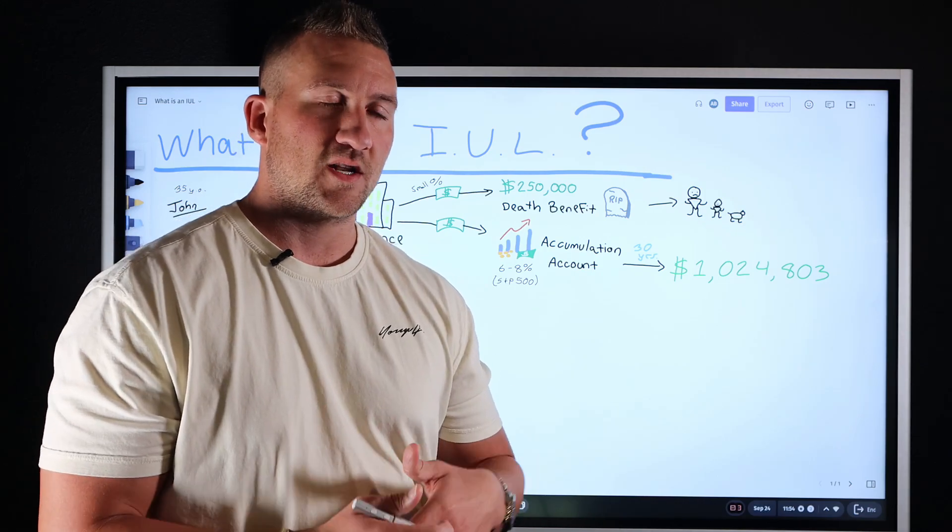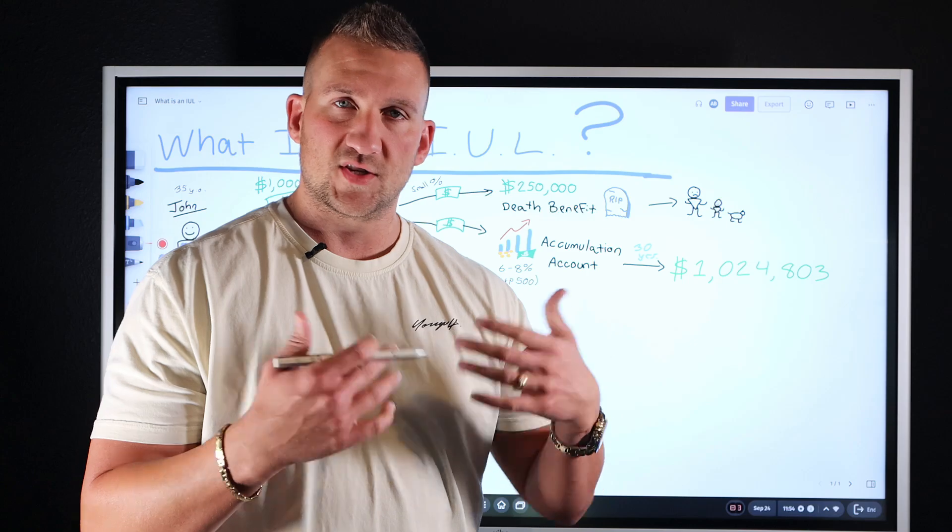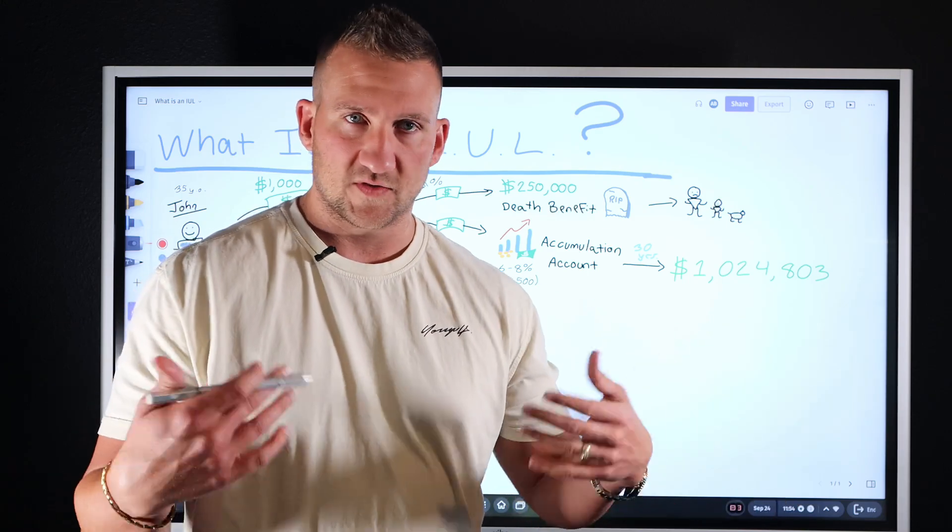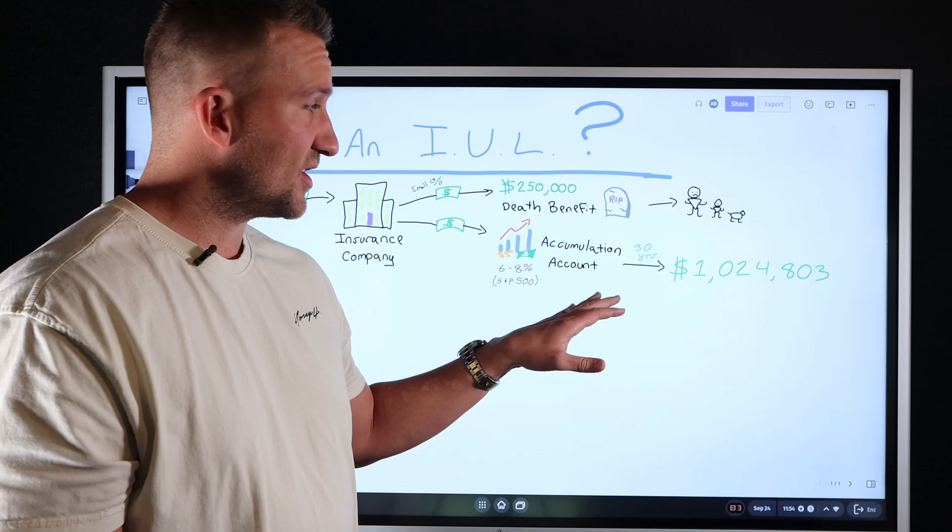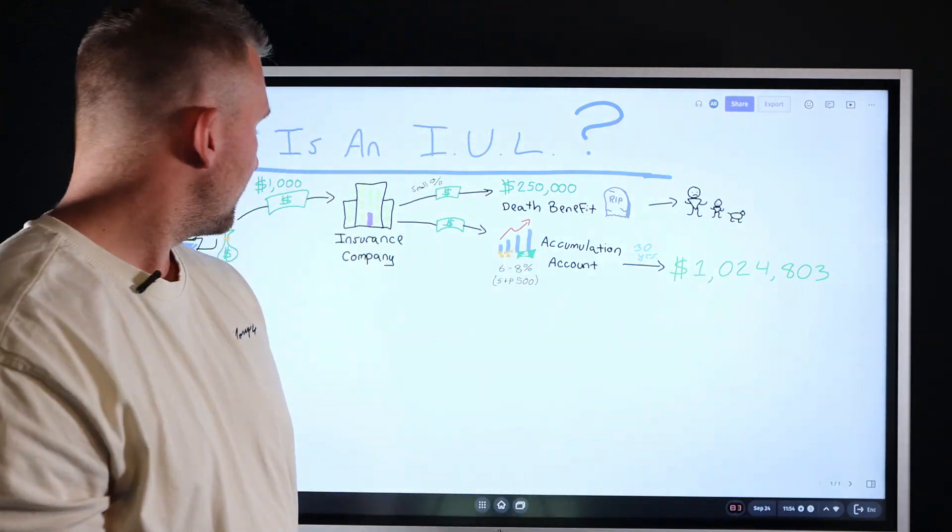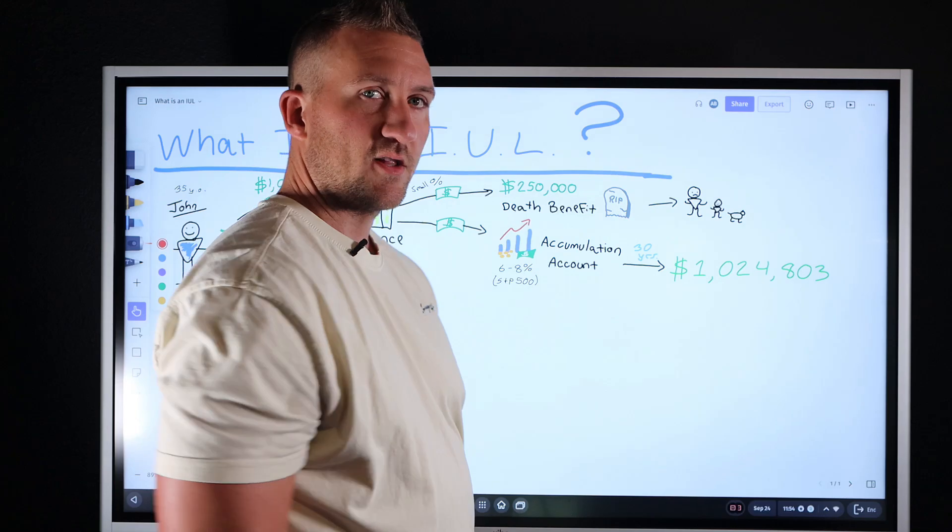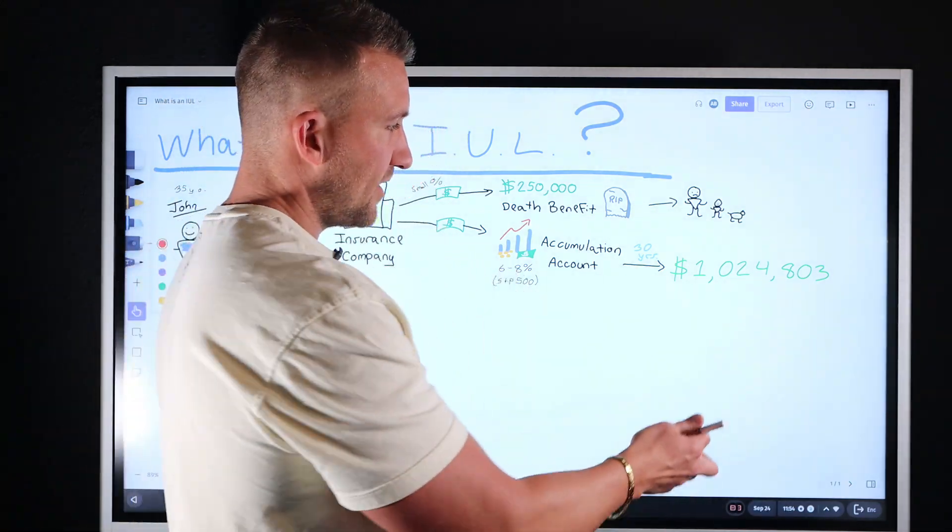Loan provisions allow you to take money from these accounts tax-free, right? Because loans are non-taxable event. And there's a slew of different types of loans, variable fixed, net wash zero loans and stuff like that. And it's very strategic how you take those funds. But 30 years from now at retirement, he would be 65 and he would be sitting on roughly a million dollars in this account to aid in his retirement, right? Supplemental retirement income.